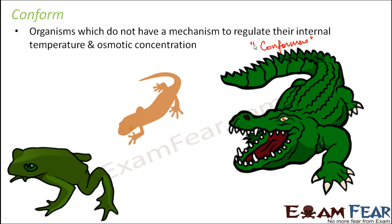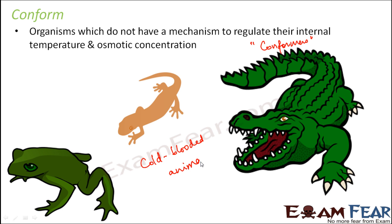Some examples of conformers are reptiles and amphibians. These reptiles and amphibians are also termed as cold-blooded animals. Cold-blooded animals are those animals whose internal temperature changes with the changes in the external temperature.